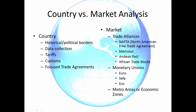Now, NAFTA you may have heard of — that is an agreement between the United States, Canada, and Mexico. Mercosur is a trade block which includes Argentina, Brazil, Paraguay, and Uruguay, and associates with Bolivia, Chile, Colombia, Ecuador, and Peru. The Andean Pact just takes the first four, which are Argentina, Brazil, Paraguay, and Uruguay.